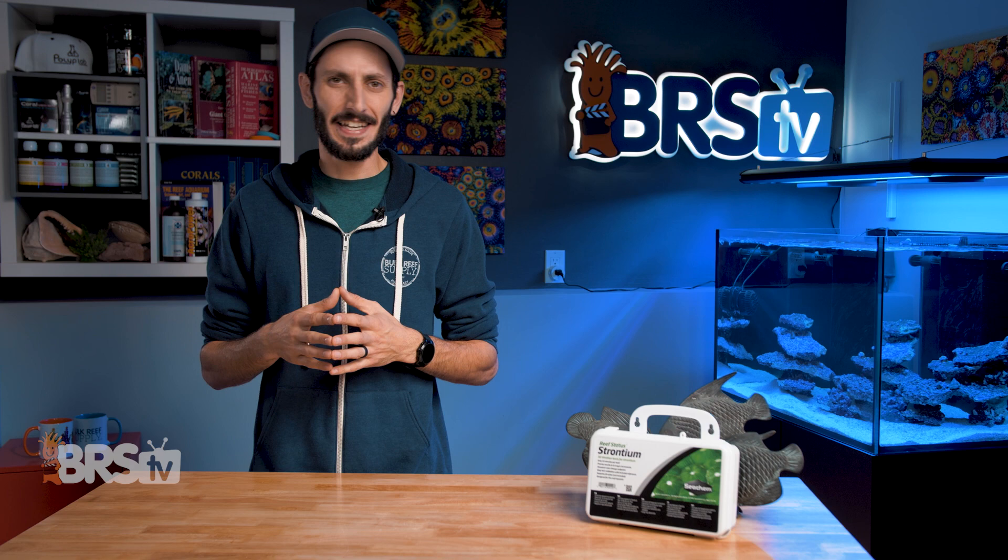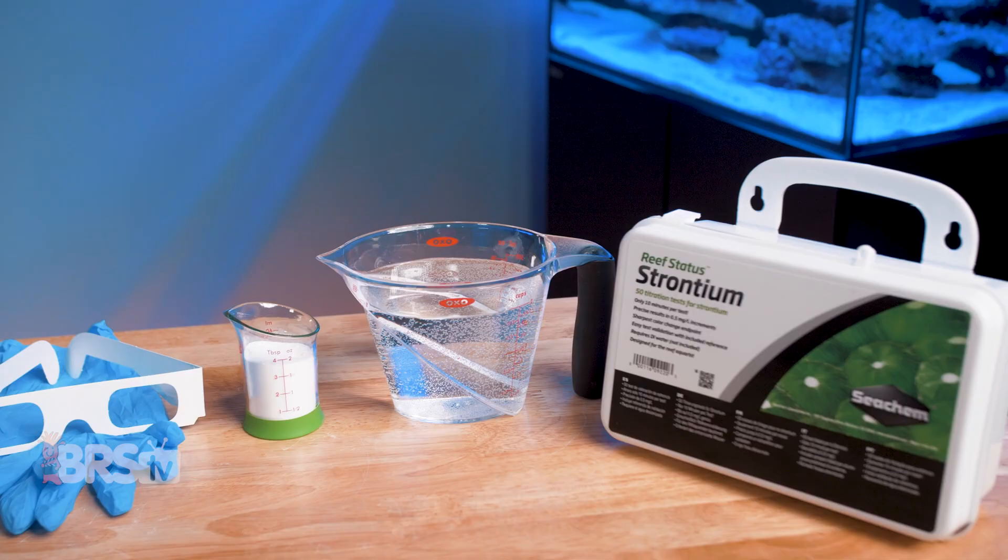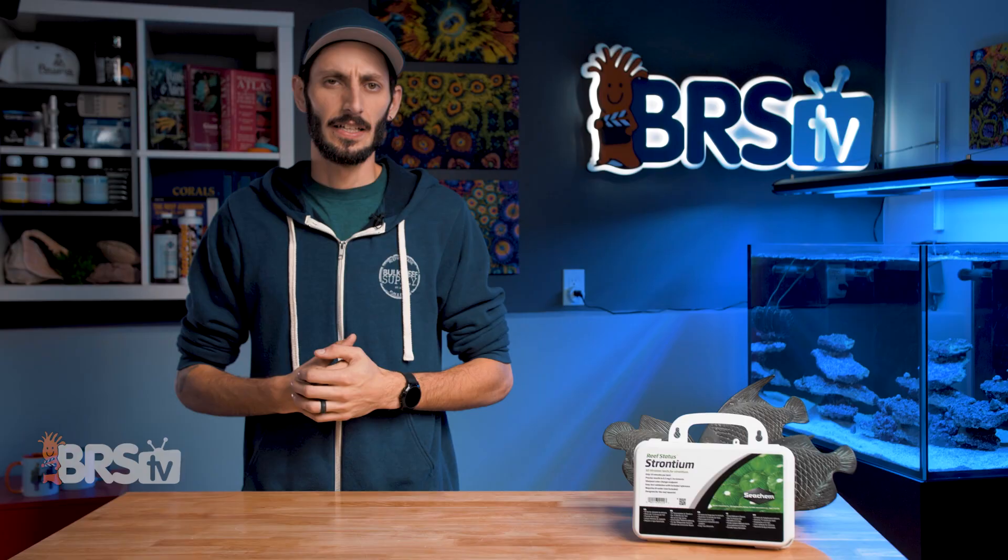Before you get started, get some fresh RODI water, your personal protective equipment, a little bit of baking soda just in case, and clear a surface to perform the test. This strontium test kit has six stages that include pre-wetting, absorption, wash, elution, then adding reagents, and finally titrating.